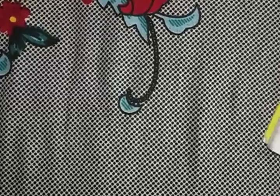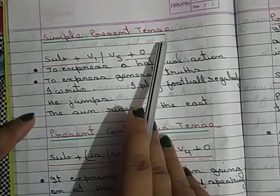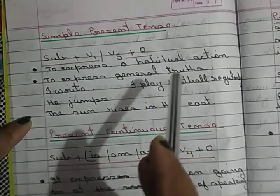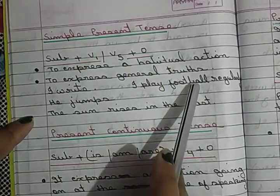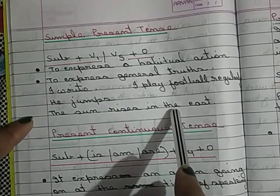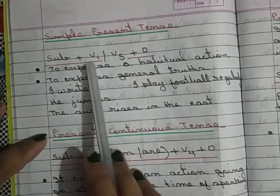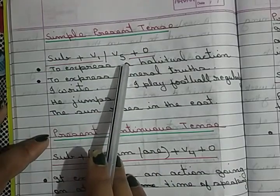Now we are going to see the structure of simple present tense. Simple present tense is used to express a habitual action — example: I play football regularly — or to express a general truth — example: the sun rises in the east. The structure is: Subject + V1/V5 + Object, where V5 is used in case of third person.